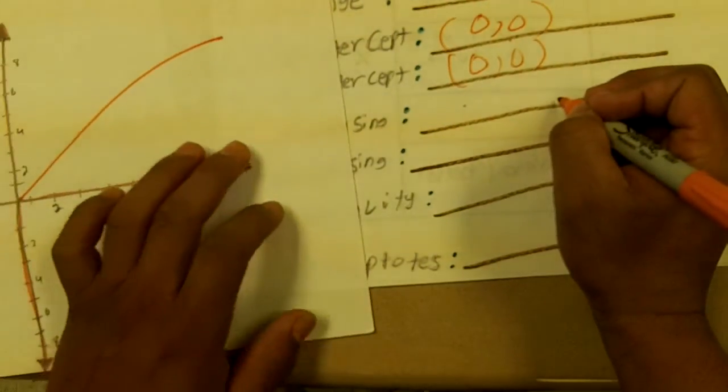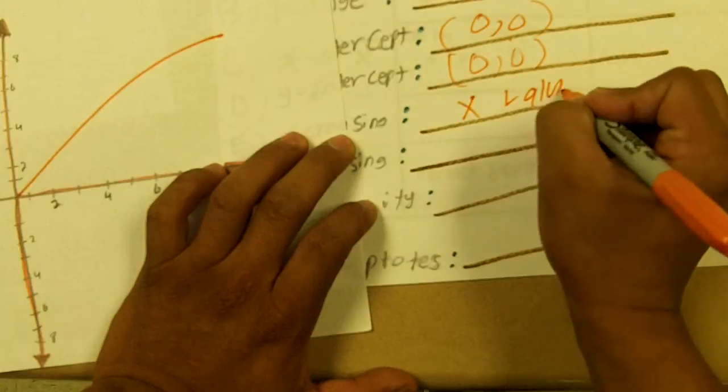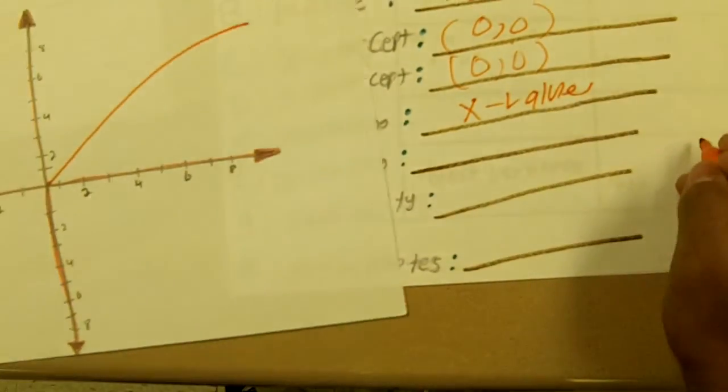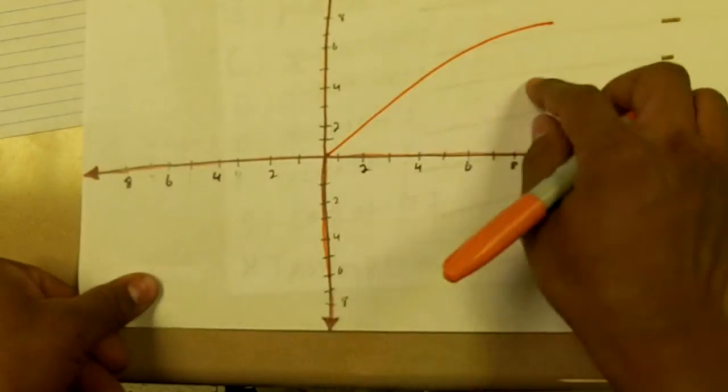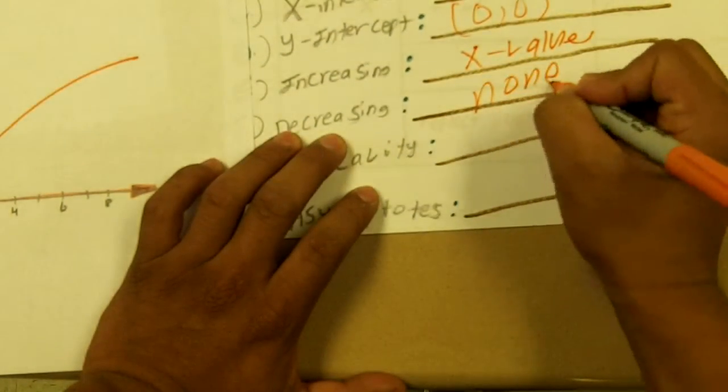And for the increasing part, it is only increasing in the x values. That's the only part you see it increasing here. And then for decreasing, it's not decreasing at all. So that's a no.